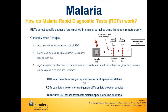Differentiating between species of malaria can be particularly important. For instance, if a person is infected with Plasmodium falciparum and it is not detected within 24 hours of infection, it is more likely the infection may progress to severe illness, often leading to death. Whereas if a person is infected with one of the other species of malaria, the situation may not be as serious.